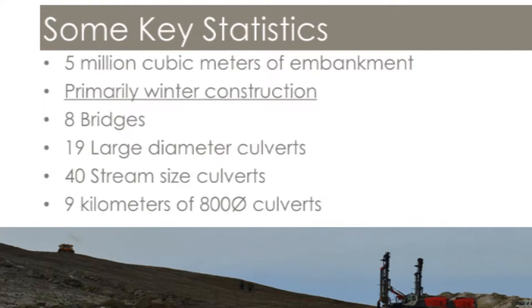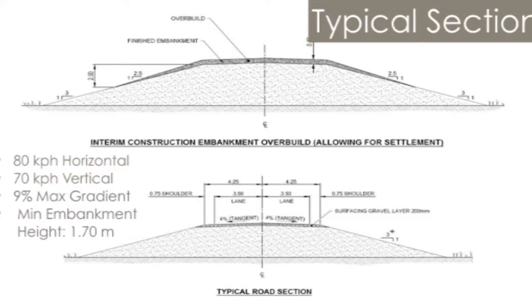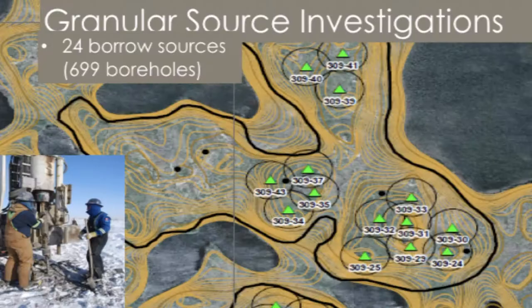The biggest number here is the five million cubic meters of embankment that needed to be sourced and placed. To put that in context, picture a pathway about a meter wide by a meter high stretching from Vancouver to just outside of Montreal. The general basis behind the design is to keep the underlying ground frozen, so the minimum depth of embankment is just under two meters. We also allowed for seasonal settlement of 0.4 meters because this was all built in winter in frozen conditions. To find all that material, we did it over three winter drilling programs — a total of 24 borrow sources looked at, about 700 boreholes drilled, all in three years but with only one month each year to do it.